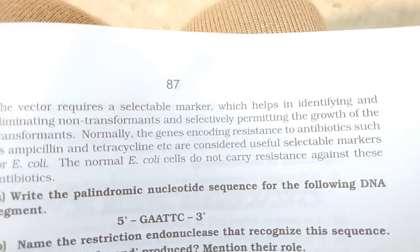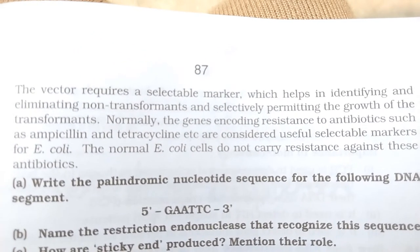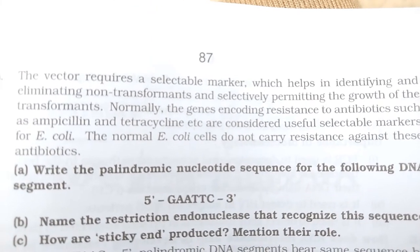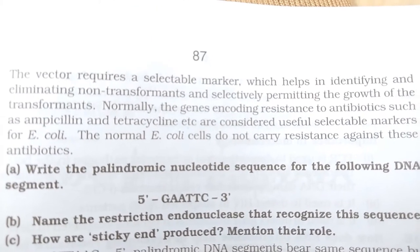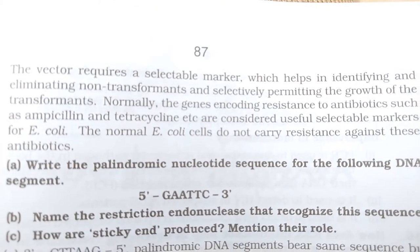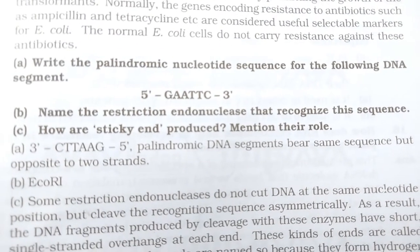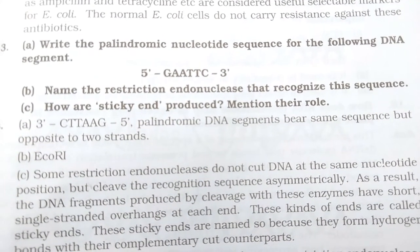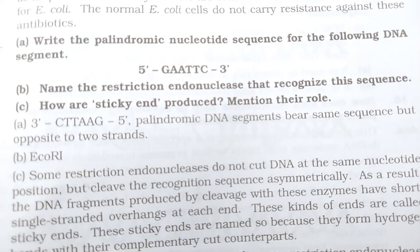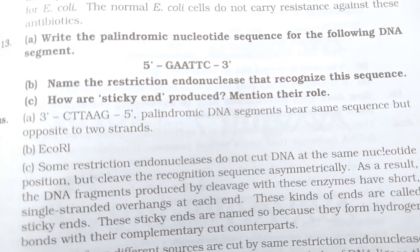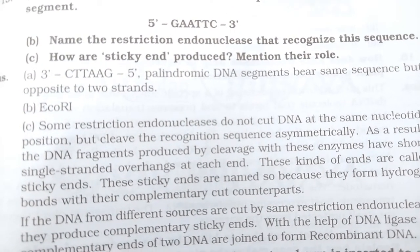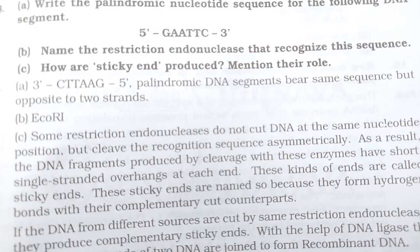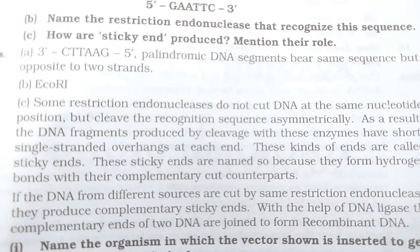When you want to read the answers, hold the video and go through them. Next question: name the palindromic nucleotide sequence for the DNA segment 5'-GAATTC. Name the restriction endonuclease that recognizes this sequence, and explain how sticky ends are produced. Mention their role.